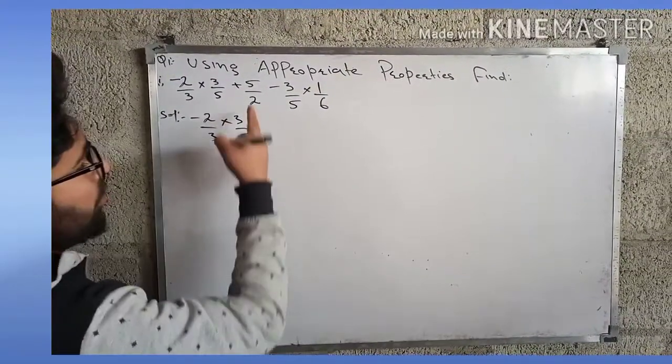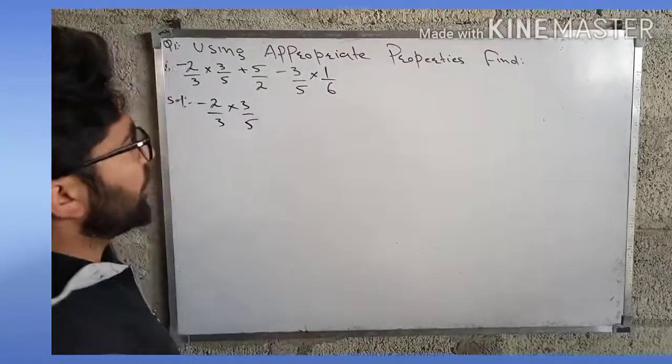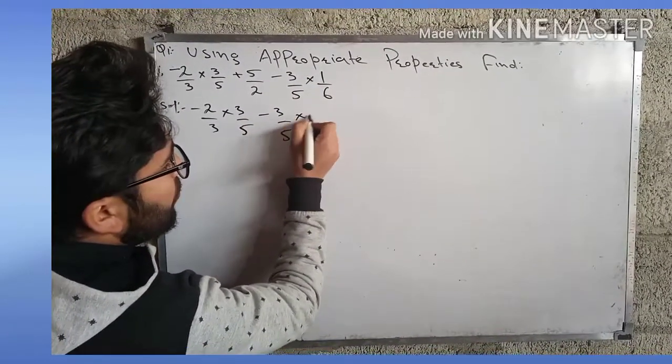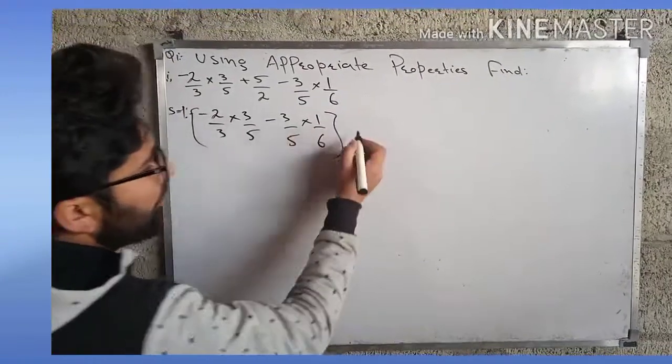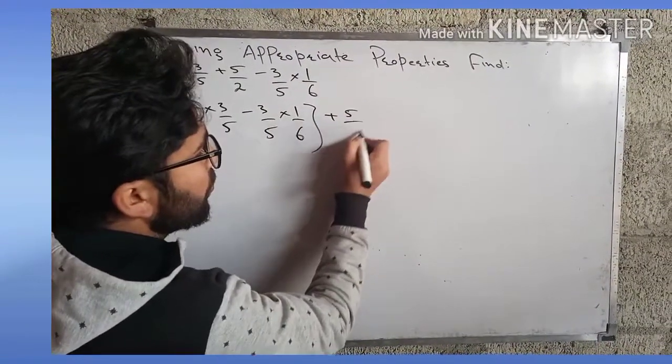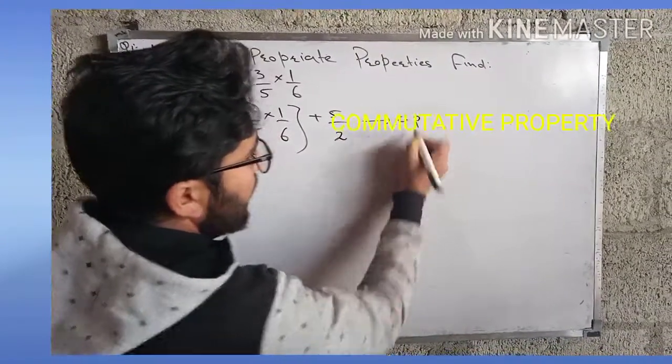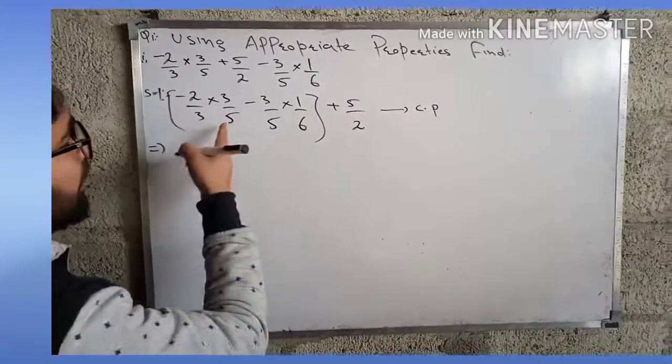We can use here commutative property. We can write it as -3/5 × 1/6. So here we have used commutative property. Now again here, 3/5 and -3/5, they are same rational numbers.